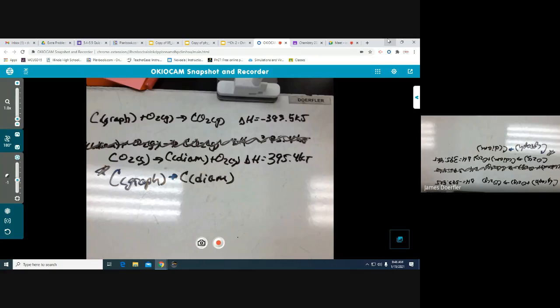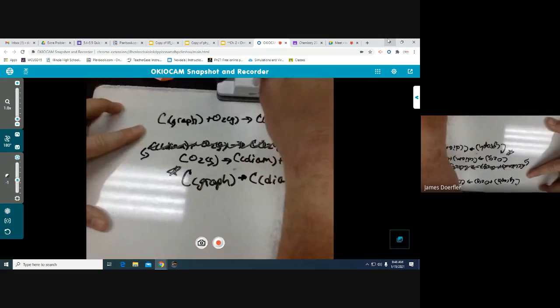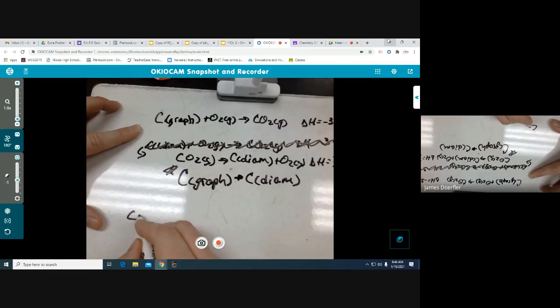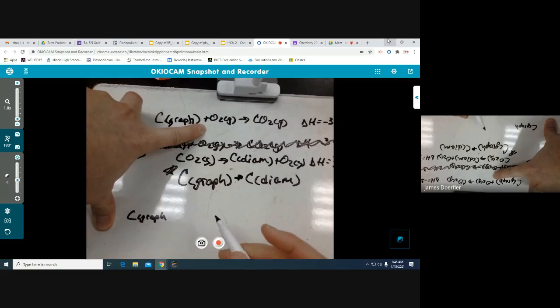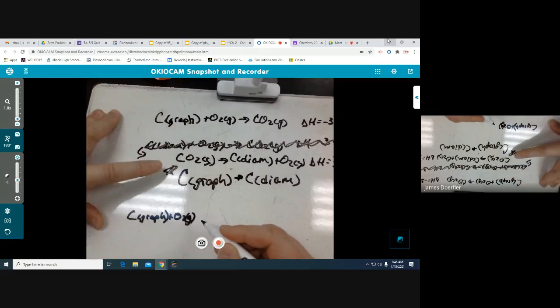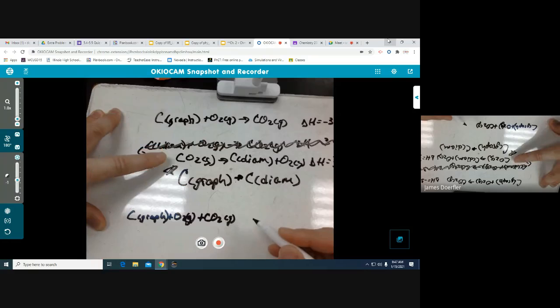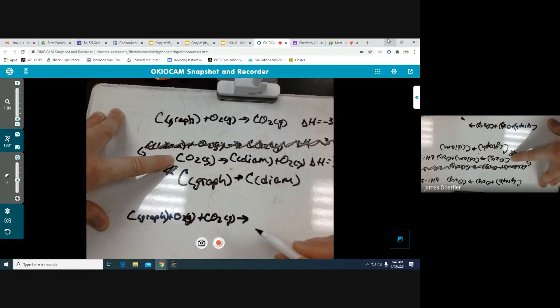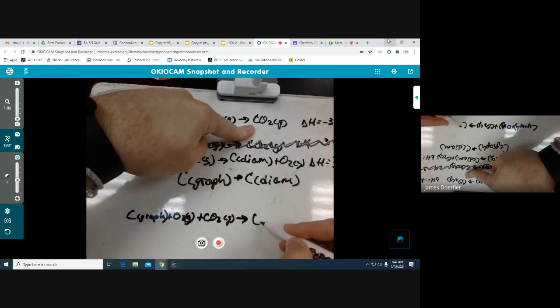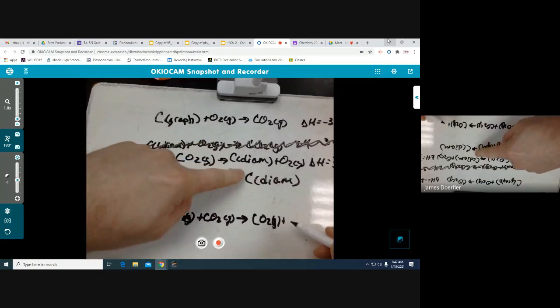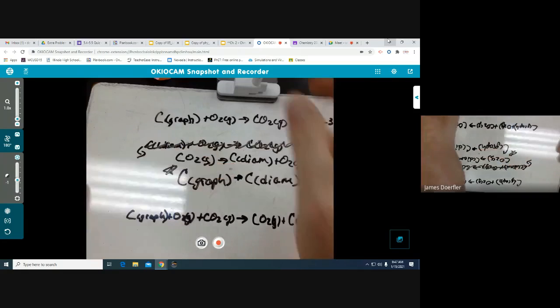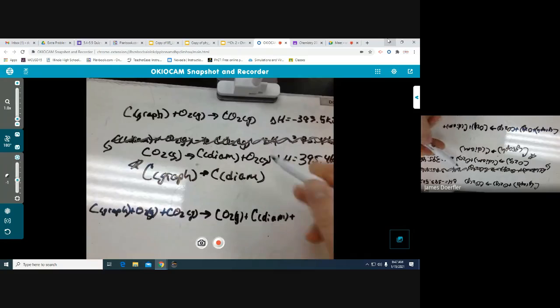So now we want to put them together. So we have C as graphite plus O2 gas, that's all for the first one on the left hand side, plus CO2 gas, that's all for the second one, yields, now go back up to my first equation, write down my products, CO2 as a gas, plus that's the only one there, carbon as diamond, and O2 gas. So I've got everything added up in terms of reactants and products. Now I start seeing what can I eliminate mathematically. Can I eliminate carbon as graphite mathematically? Is it on both sides? No, it's not, so it gets carried down, carbon as graphite.